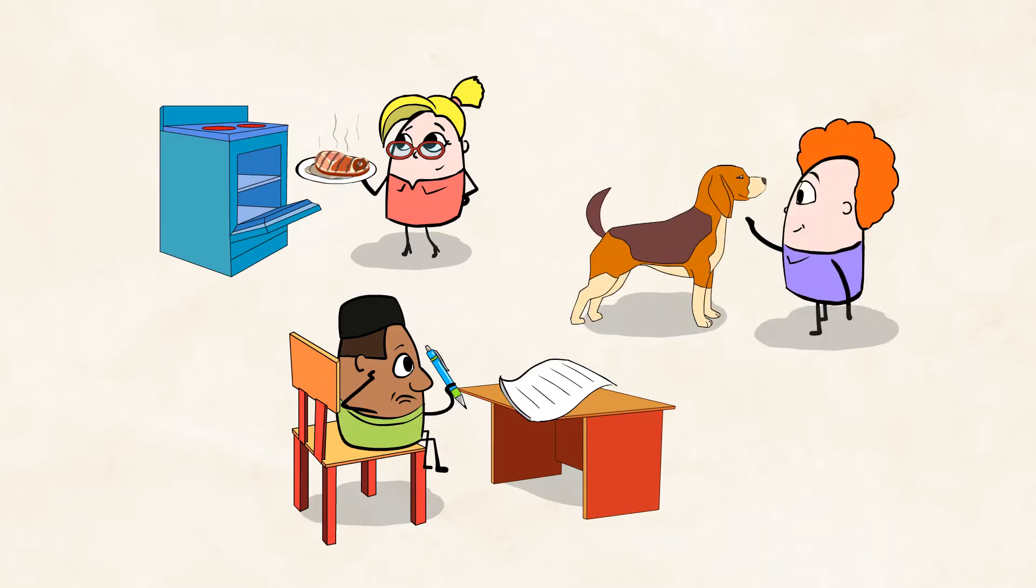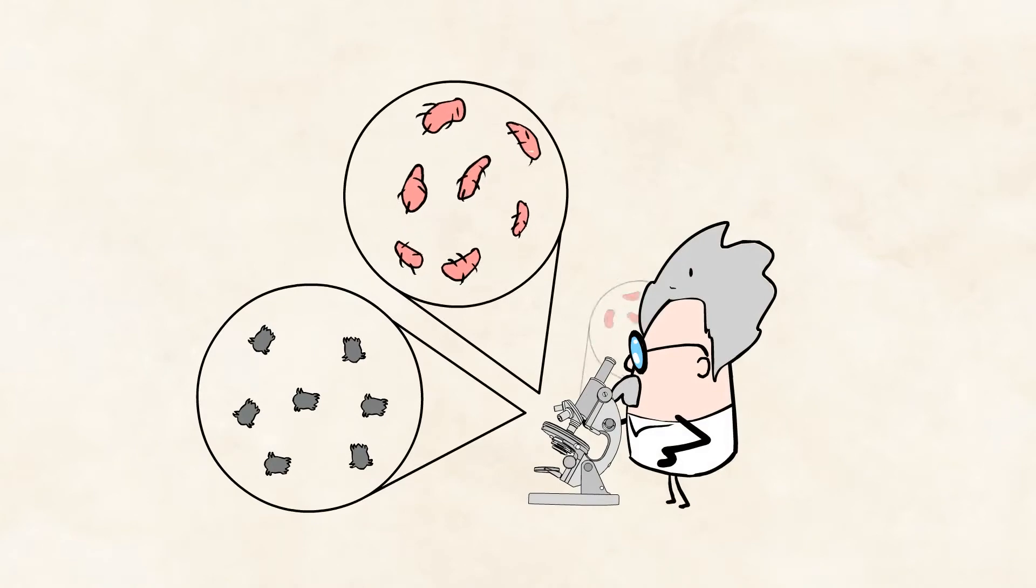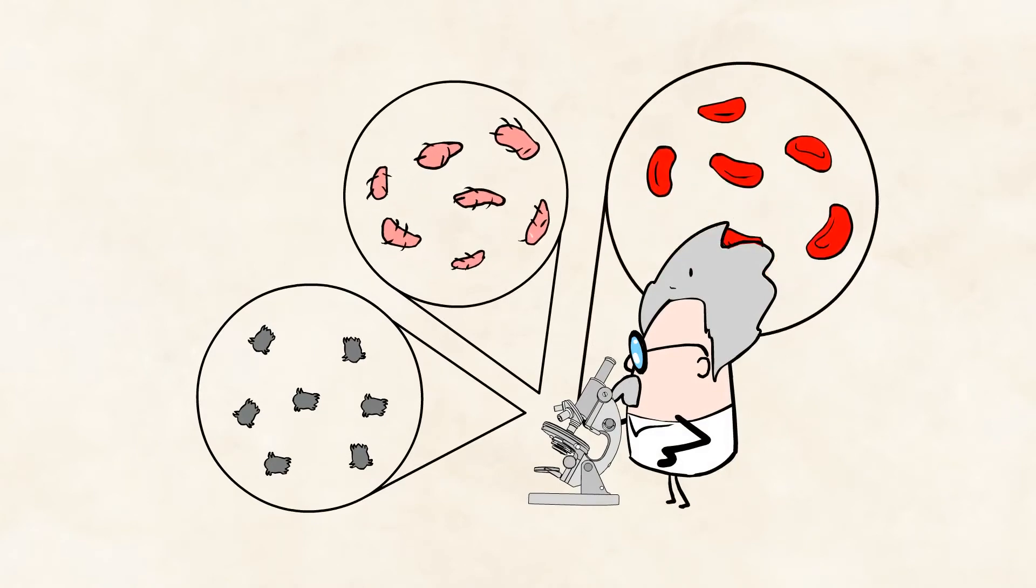Even if you don't see anything moving, motion is still happening all around you. If you were to zoom in with a microscope, you'd see dust mites moving around, bacteria wiggling, and cells transporting nutrients to the rest of the body.